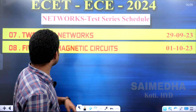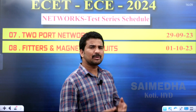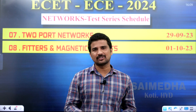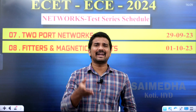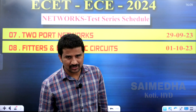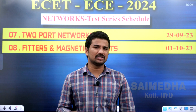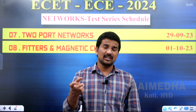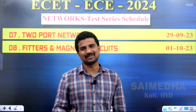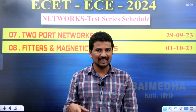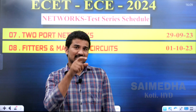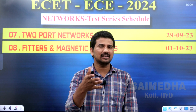On October 1st, filters and magnetic circuits will be covered. Filters include low-pass filter, high-pass filter, band-pass filter, band-stop or band-rejection filter. For an RC combination, the output across the capacitor gives a low-pass filter, and the output across the resistor gives a high-pass filter. Magnetic circuits will also be part of the October 1st session.